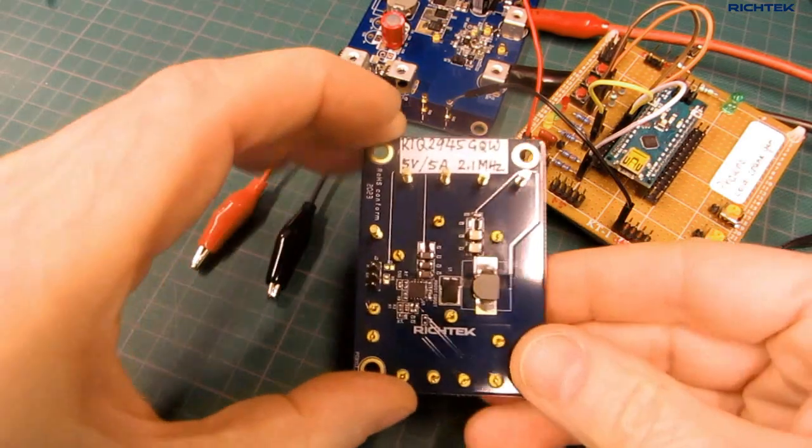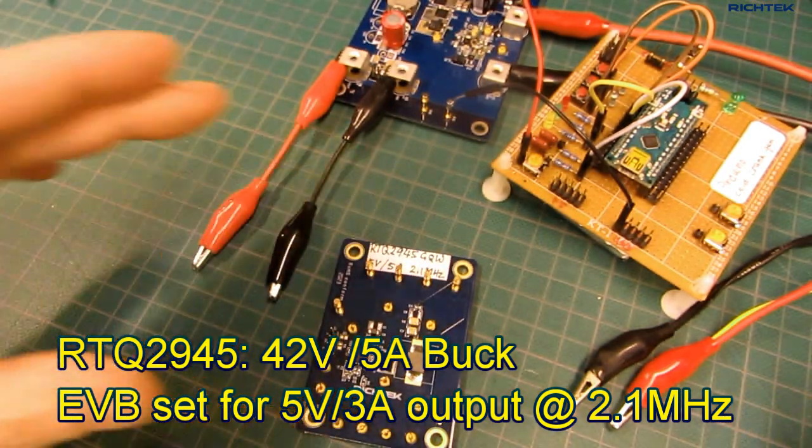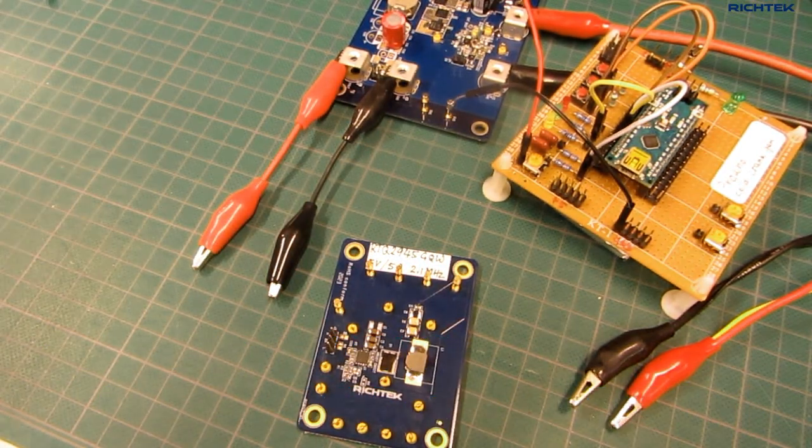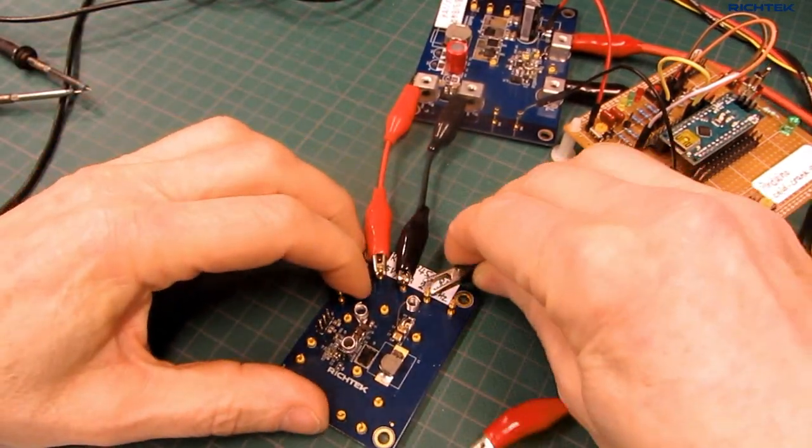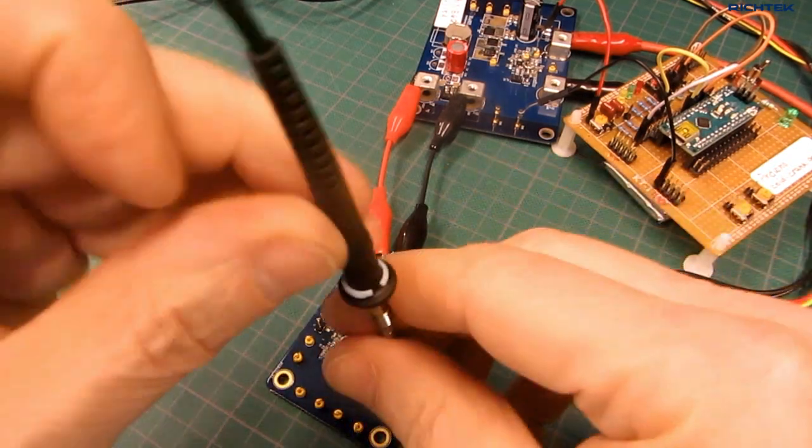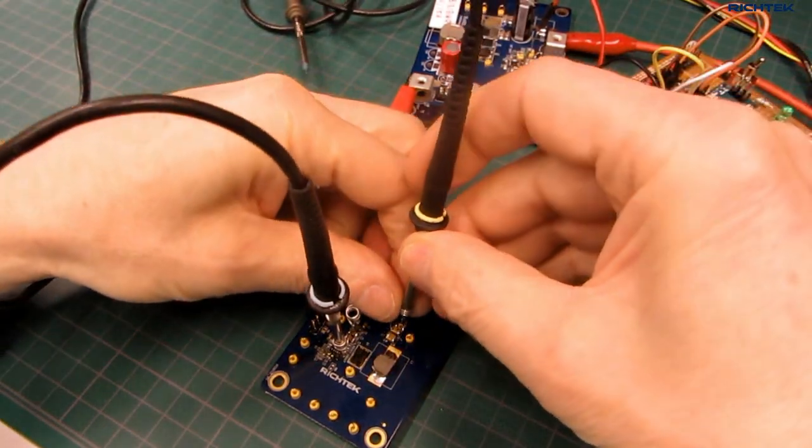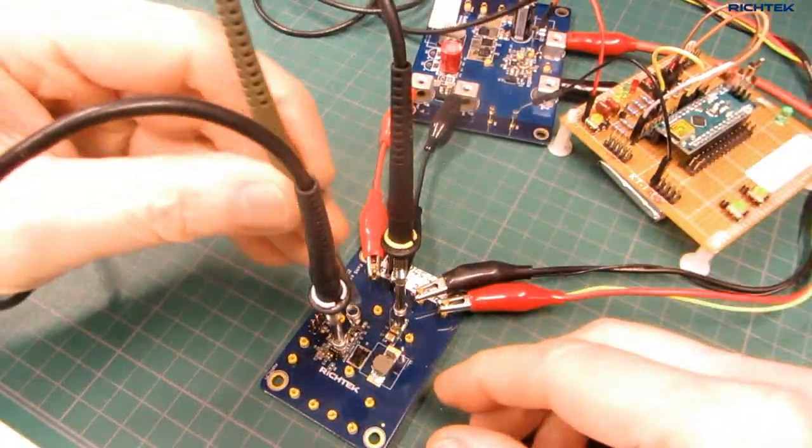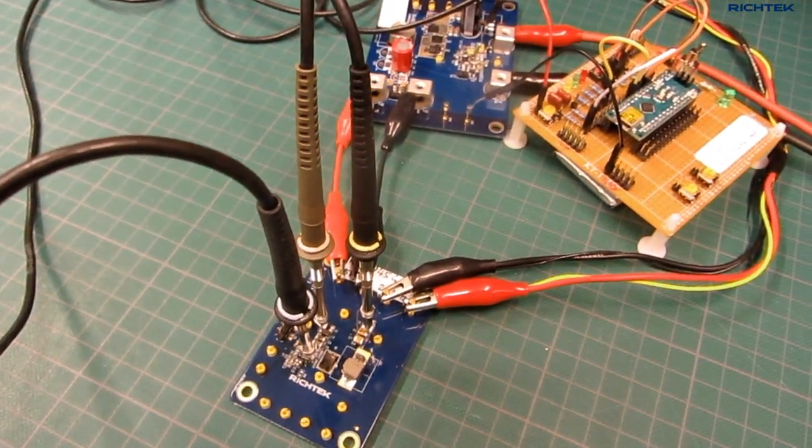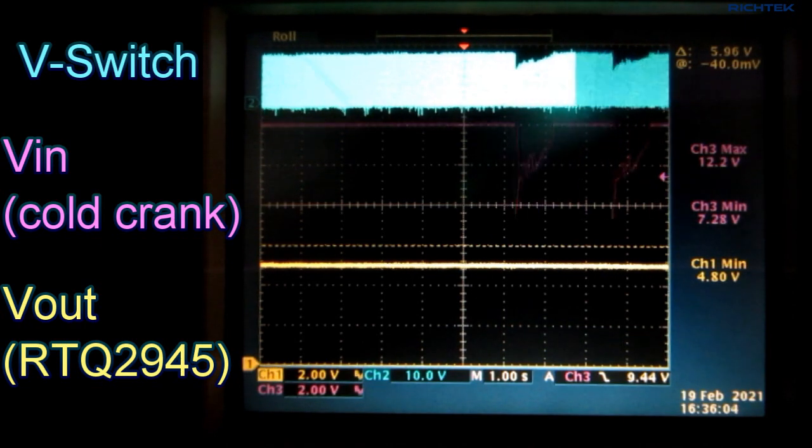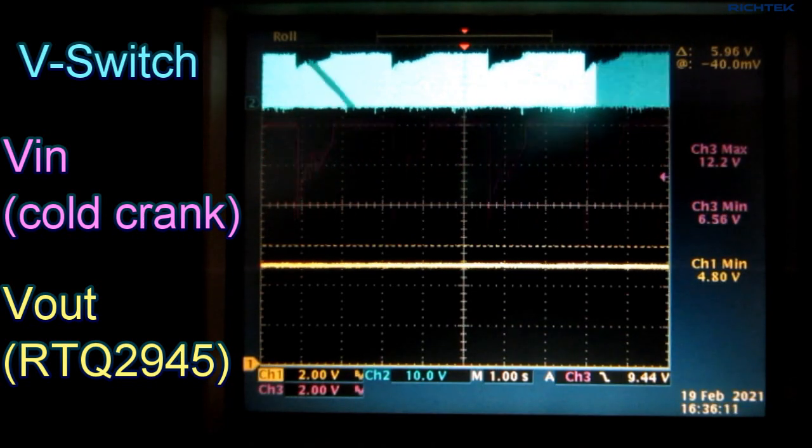To illustrate this high duty cycle feature, let's test the RTQ2945 42V 5A buck converter with the cold crank generator. The board is set for 5V output and 2.1 MHz switching frequency. I connect the cold crank generator to the buck converter input and connect a 3A load to the 5V output. And I measure the buck converter input voltage, output voltage and switching node as before. You can now see that the output voltage stays quite stable, even when the input voltage reaches 5.5V.